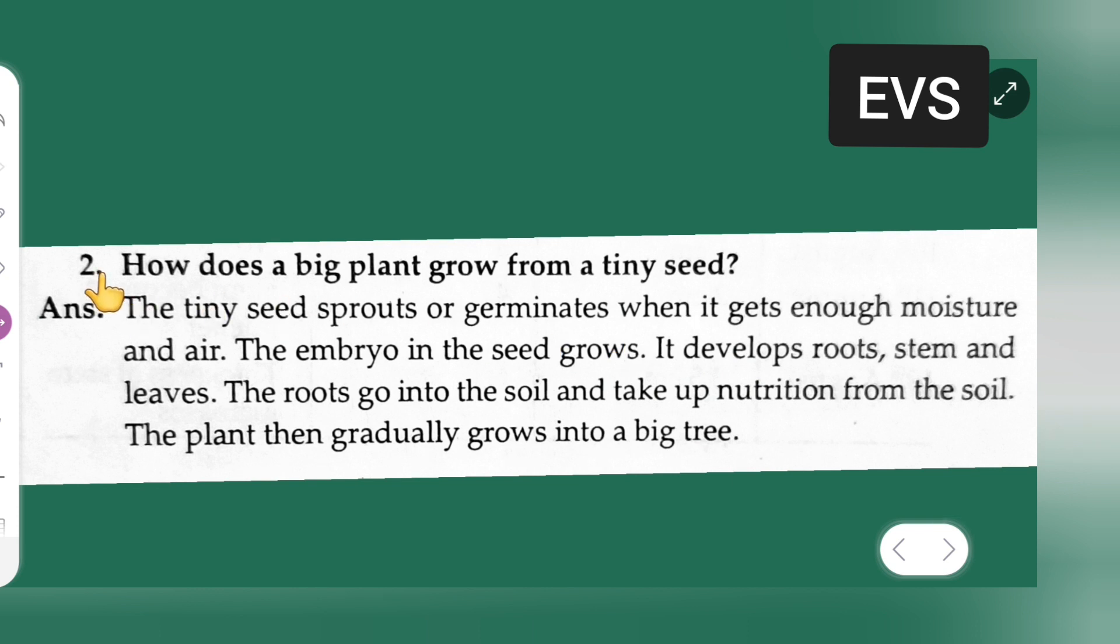How does a big plant grow from a tiny seed? Answer: the tiny seed sprouts or germinates when it gets enough moisture and air. The embryo in the seed grows.